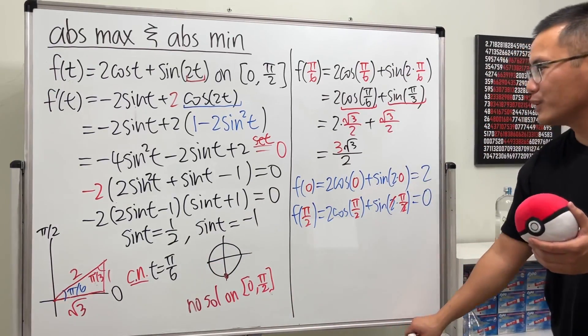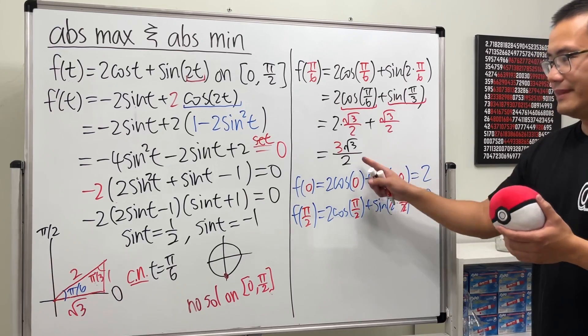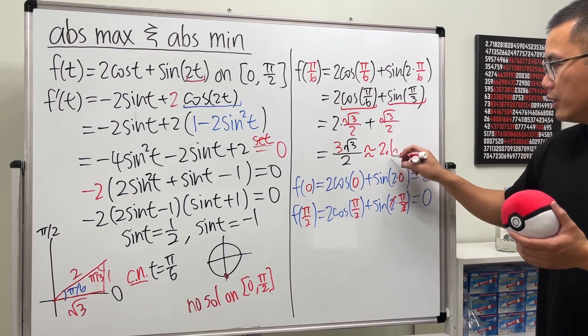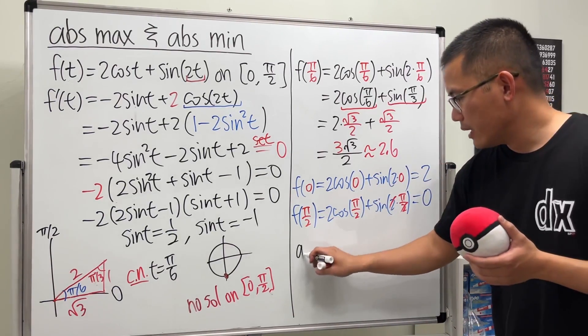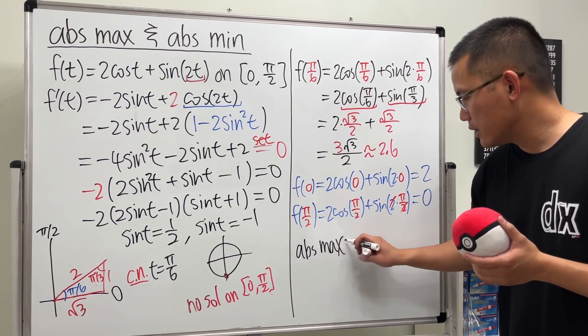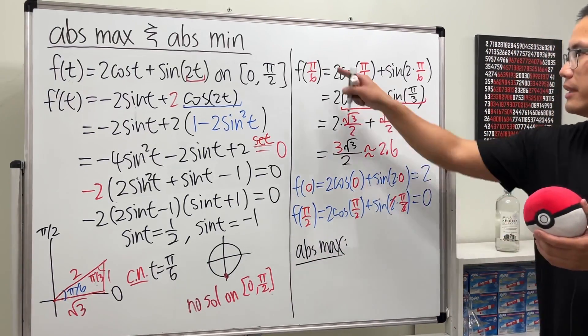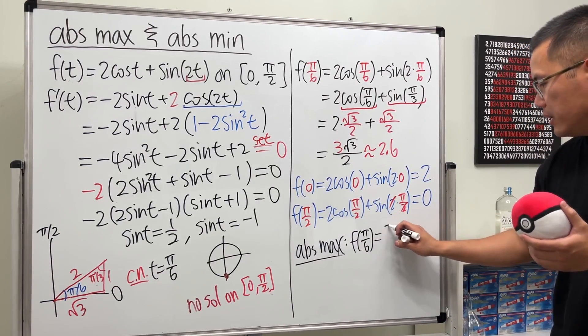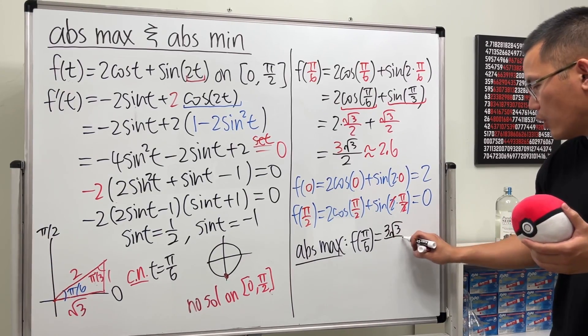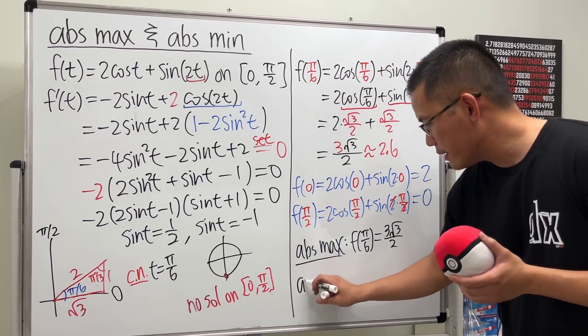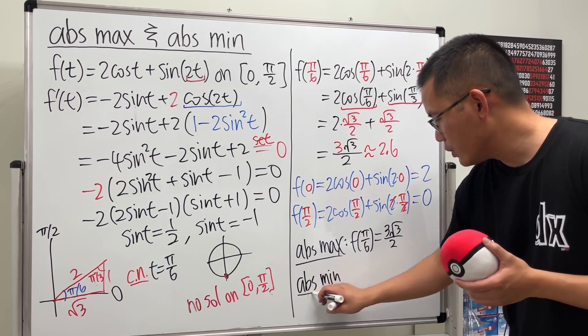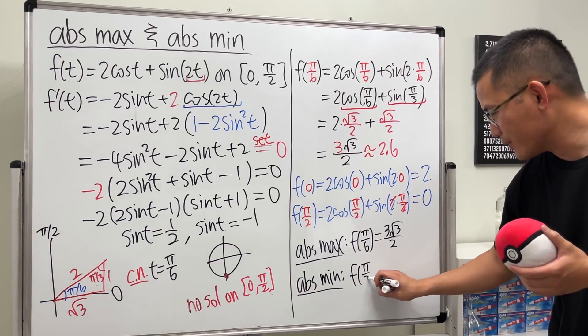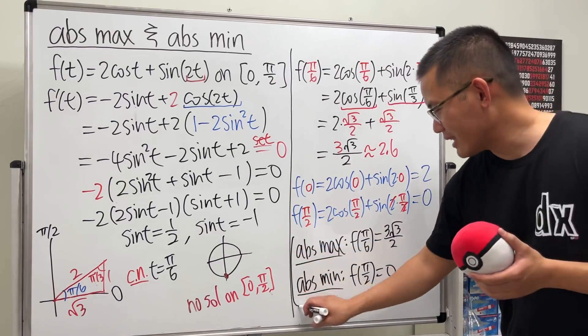Okay, we have all the things that we need. Which one is the biggest? Is it this or that? Let me tell you, this one is bigger. And if you would like, you can use the calculator. And you will get approximately 2.6. So here we go. So our absolute max is that f(π/6). And I'll put down the exact answer, which is 3√3/2. And we also have the absolute min, which is that, which is f(π/2). And we get 0. All right. That's it.